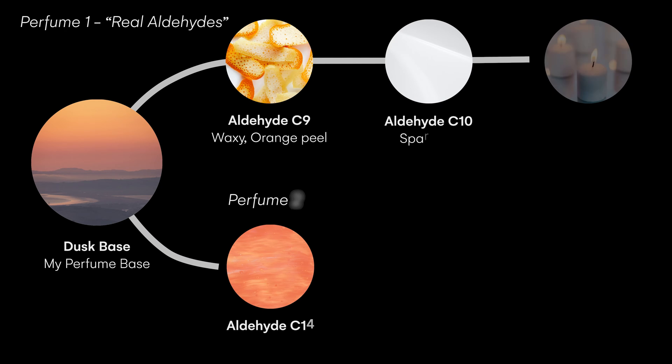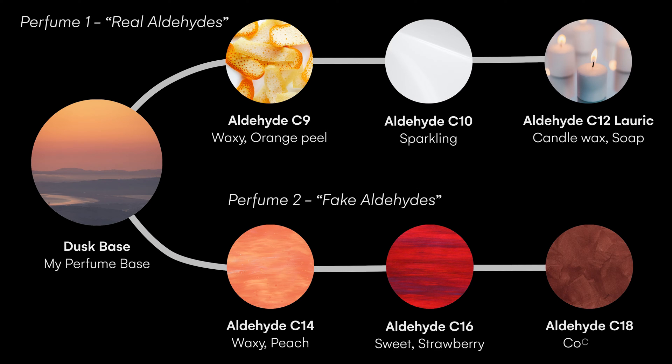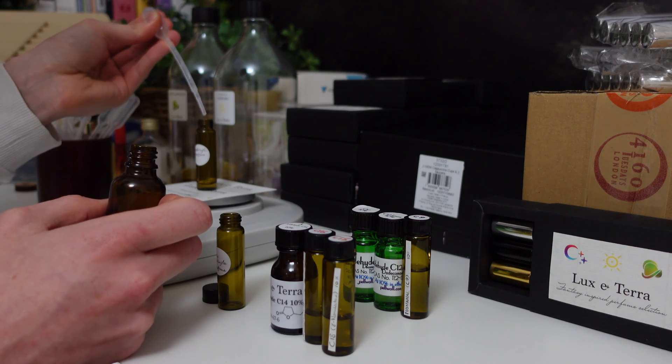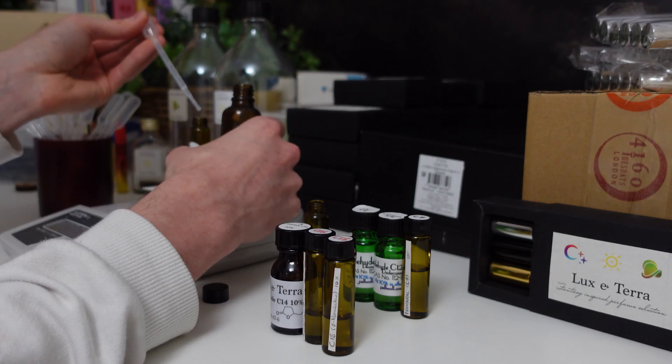I wanted to see for myself how these two different classes of aldehydes — the real ones and the fake ones — actually smell from each other in a perfume. So I decided to make two test perfumes, one for each class. I took my dusk perfume base from a previous video and added small amounts of both real aldehydes and fake aldehydes to that base. For the real aldehydes, I added a little bit of aldehyde C9, C10, and C12 lauric. For the fake aldehydes, I added aldehyde C14, C16, and C18 — none of which are actually aldehydes.